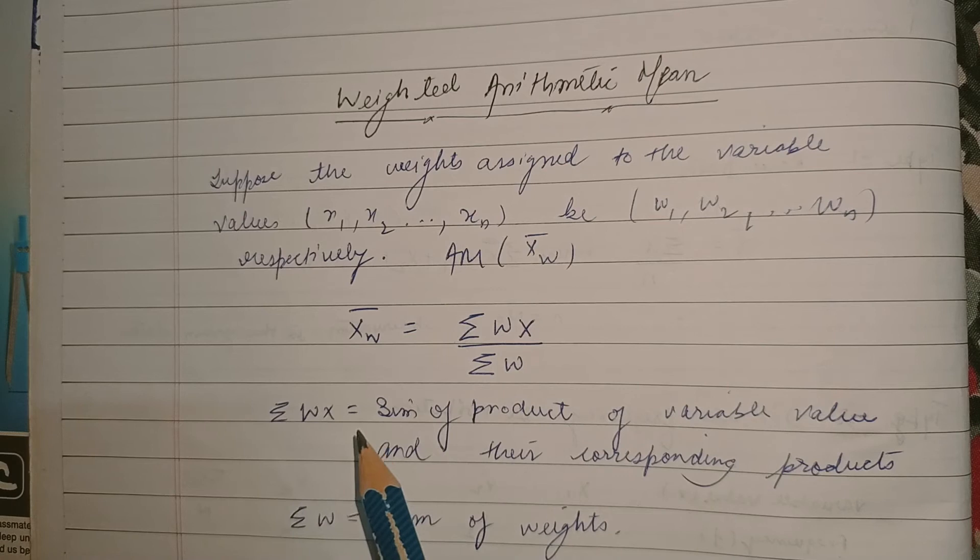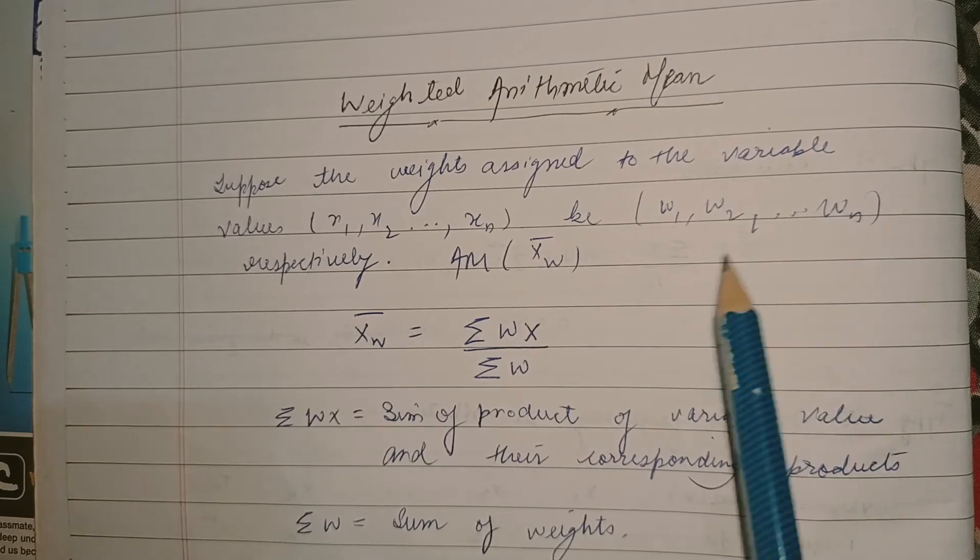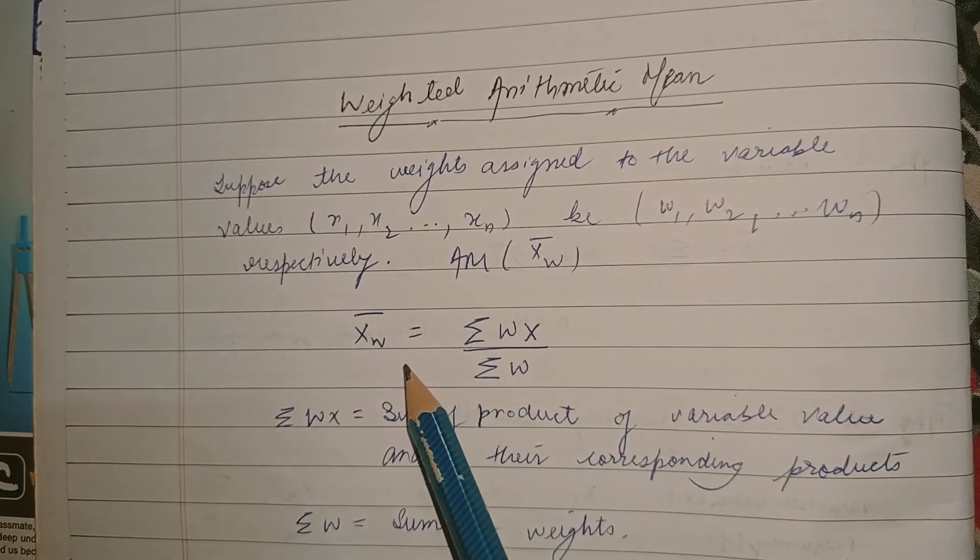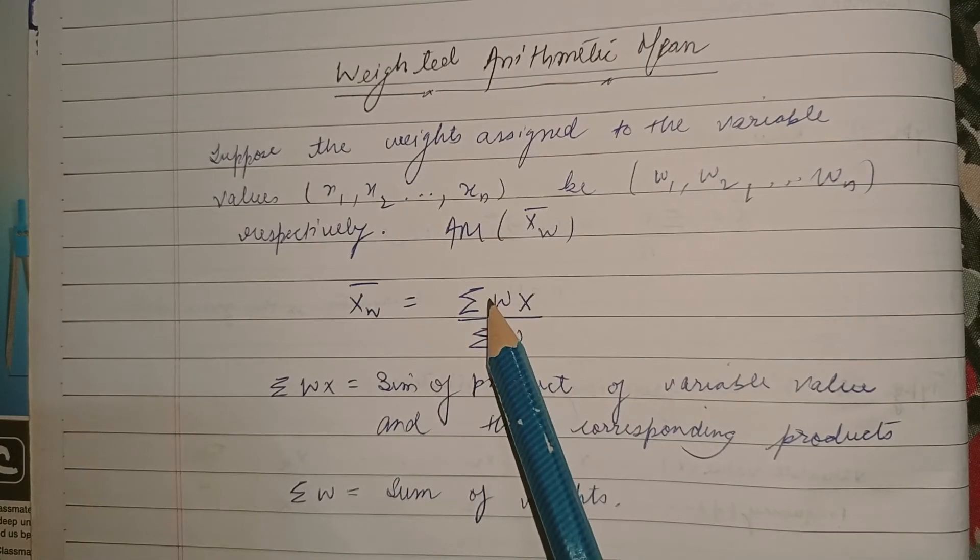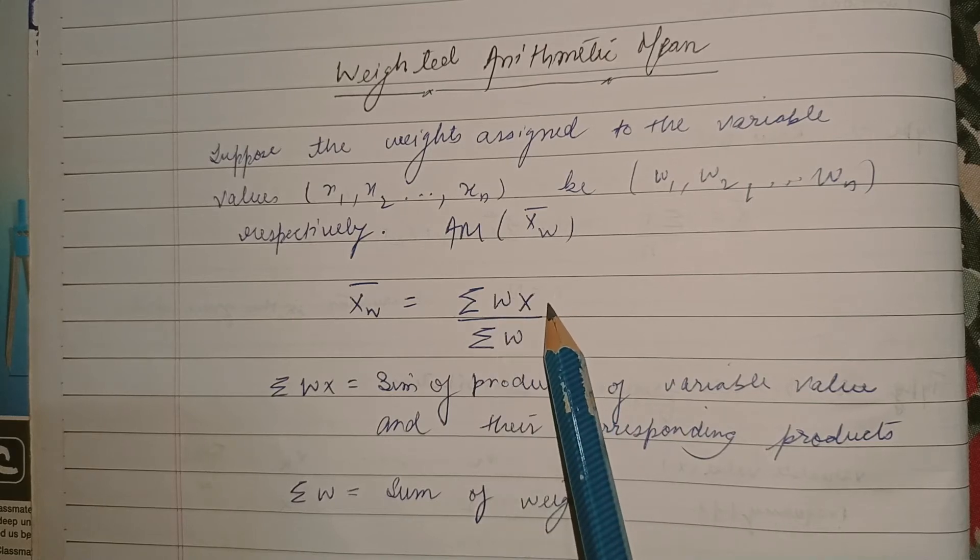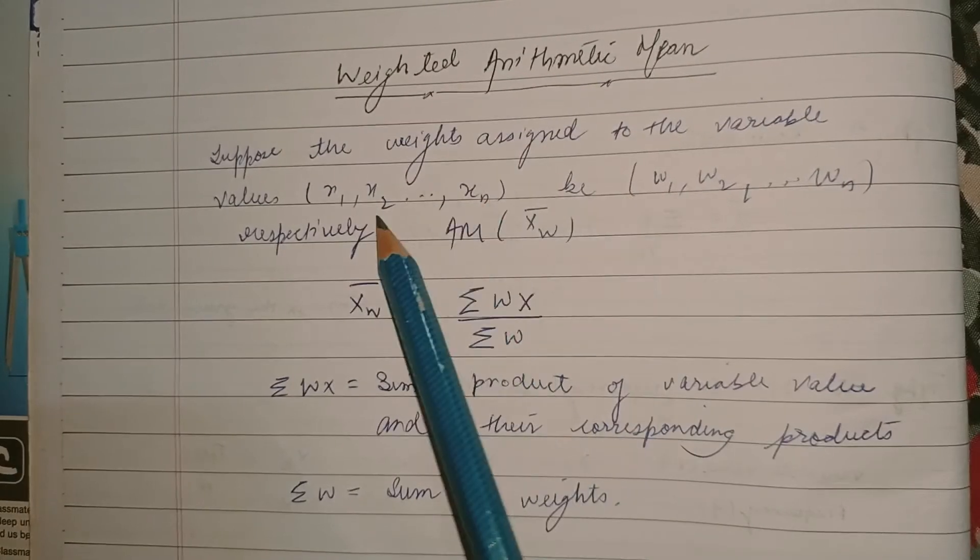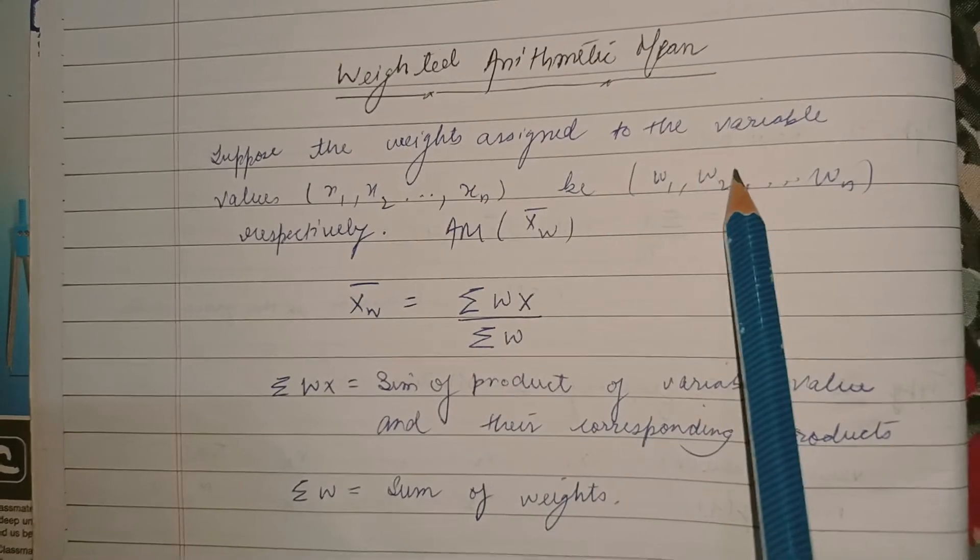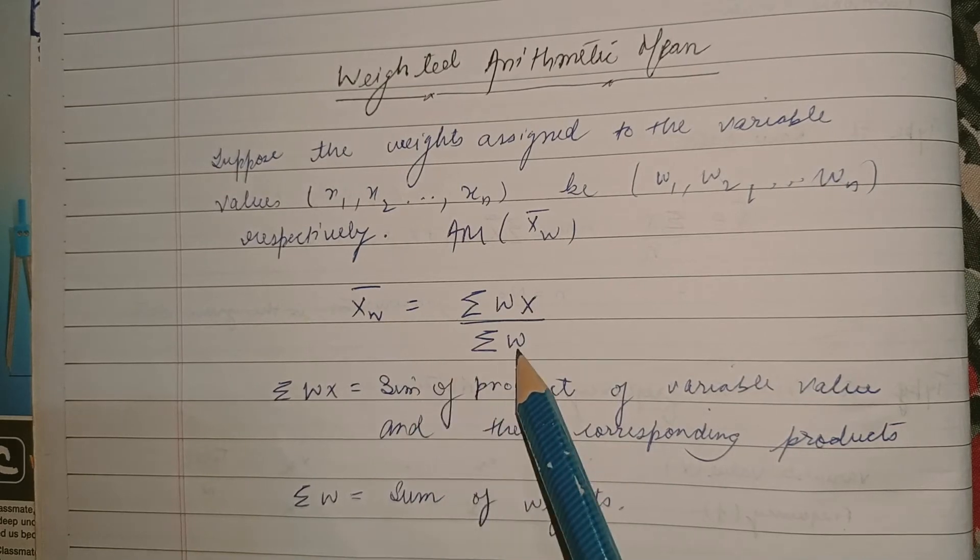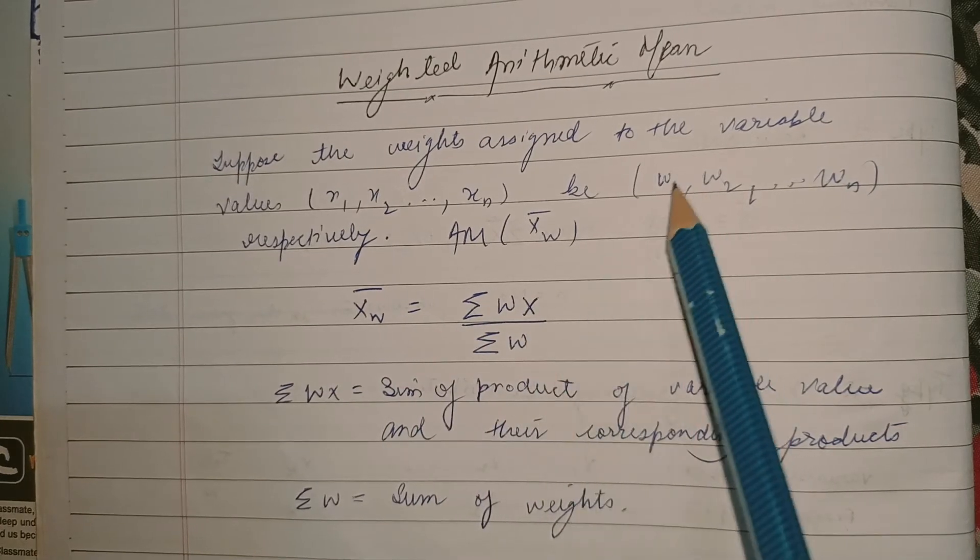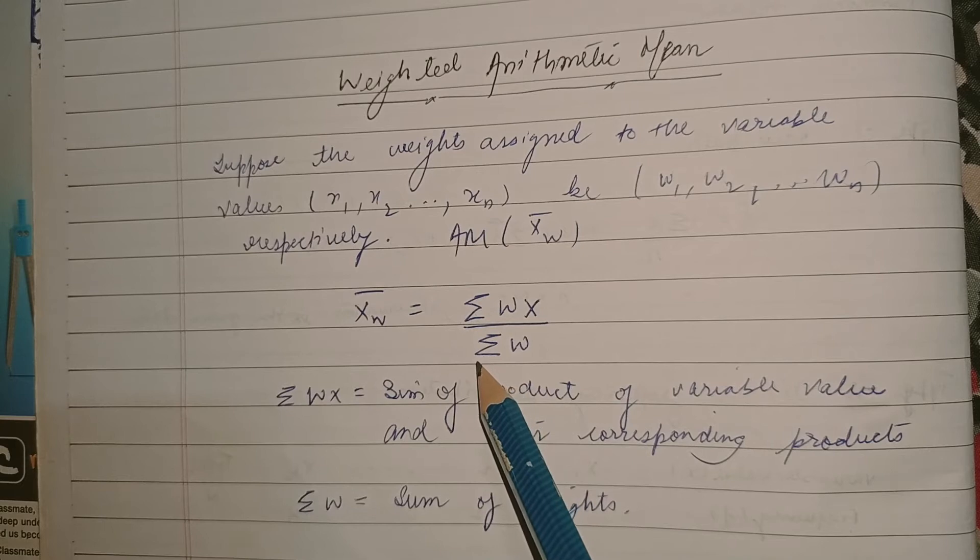Weighted arithmetic mean: suppose their weights assigned to the variables x1, x2 to xn would be w1, w2 to wn respectively. Then the arithmetic mean would be summation of products of variable values and their corresponding weights, like x1 into w1 plus x2 into w2 till xn into wn, divided by sum of the weights w1 plus w2 plus w3 till wn. Now let us see some problems.